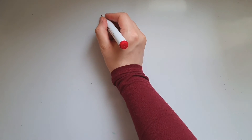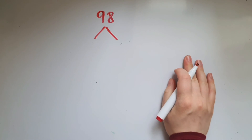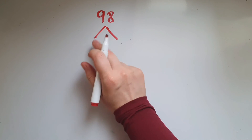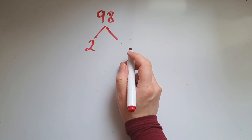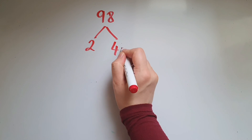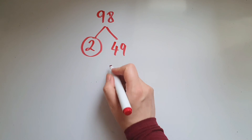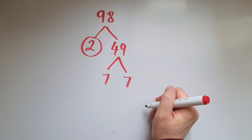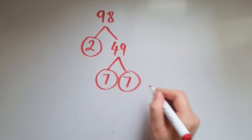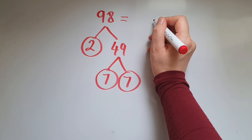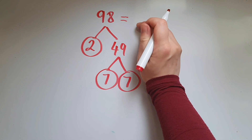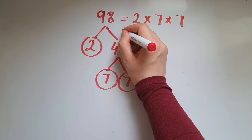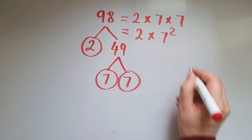Let's try another one: 98. I'll start with 2, but you can start with any prime number — 3, 5, 7, 11, etc. Does 2 fit into 98? It does, giving us 49. Circling off the prime 2. Now 49 can be divided by 7: 7 times 7 gives us 49, and they're both prime numbers, so we circle them off. So 98 can be written as a product of its prime factors: 2 times 7 times 7, or 2 times 7 to the power of 2.